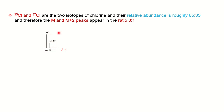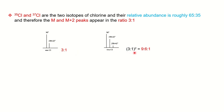A 3:1 ratio for M and M+2 governs that you have one chlorine atom in the unknown molecule. If you have 2 chlorine atoms, along with M+2 you will also have an M+4 peak. To find the intensity, you square the 3:1 ratio and use the algebraic formula (a² + 2ab + b²). So: 3² + 2×3×1 + 1² = 9 + 6 + 1, giving a ratio of 9:6:1.